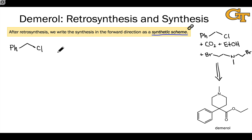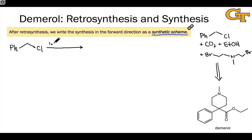The first transform we engaged was the Grignard transform. The idea is to create an organometallic reagent and then treat with CO2 and acid workup to establish the carboxylic acid. To accomplish the Grignard reaction, we start by treating with magnesium metal, then treat with carbon dioxide — we haven't isolated anything yet, so we can write all of these steps on a single line — and finally use acidic workup, written as H3O+ and H2O, to protonate the anion that forms when the Grignard reagent adds to CO2.